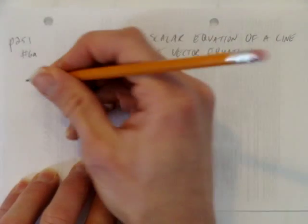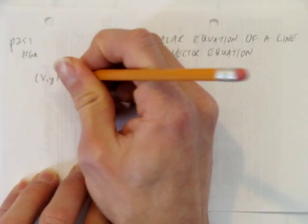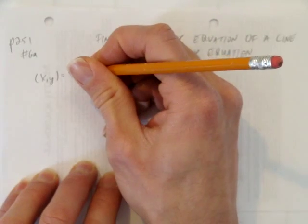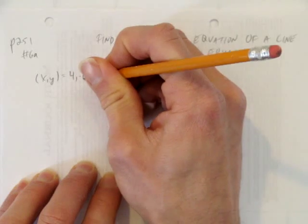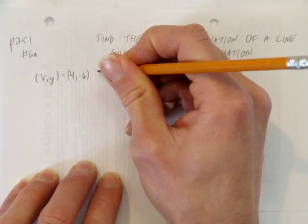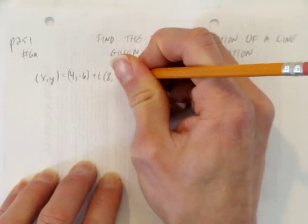And so, you're given x, y. We're trying to find the scalar equation. We're given the vector equation. In 6a, the vector equation is 4, negative 6, plus t, 8, comma 2.